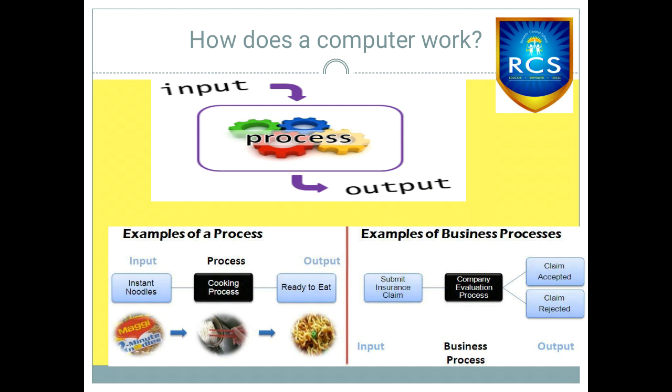IPO principle is as follows. In the preparation of idli batter: rice and dal are Input, Grinding is the Process, and finally getting idli batter is Output. Another example: you want to add 5 and 16 using a computer. Entering 5 and 16 is Input. The computer adds them — this is called Process. The answer displayed on the screen is called Output.